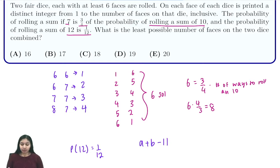And because the probability is one-twelfth, we know that this over the number of total ways to get outcomes on our dice, which is a times b, is equal to one-twelfth.